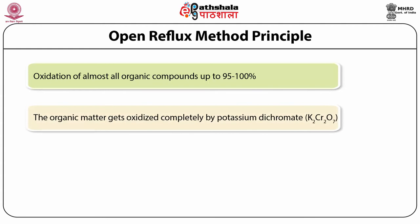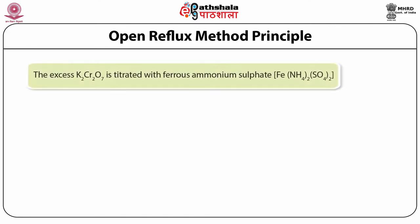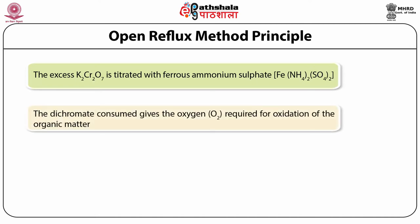The organic matter is completely oxidized using dichromate as an oxidizing agent, with silver sulfate acting as a catalyst in the presence of concentrated H2SO4, producing carbon dioxide and water as by-products. The excess potassium dichromate remaining after the reaction is titrated with ferrous ammonium sulfate, and the dichromate consumed gives the oxygen required for oxidation of organic matter — making this a back titration method.